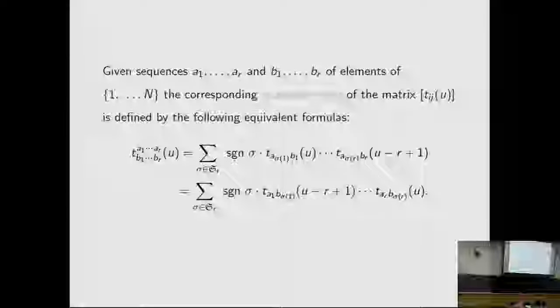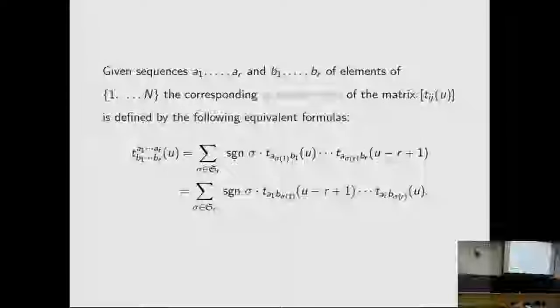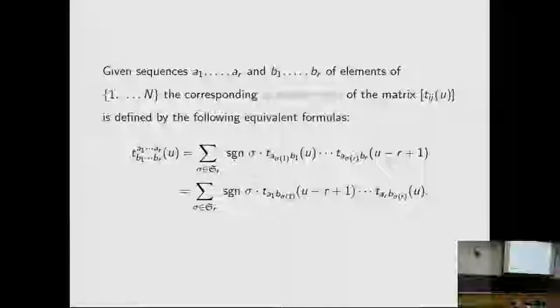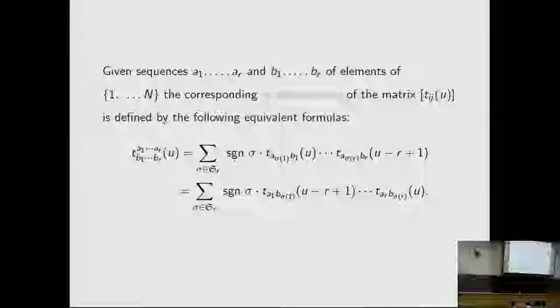Given sequences A and B of elements from 1 to N, the corresponding quantum minor of the matrix is defined by the following equivalent formulas. This quantum minor is anti-symmetric under the combination of rows and columns.